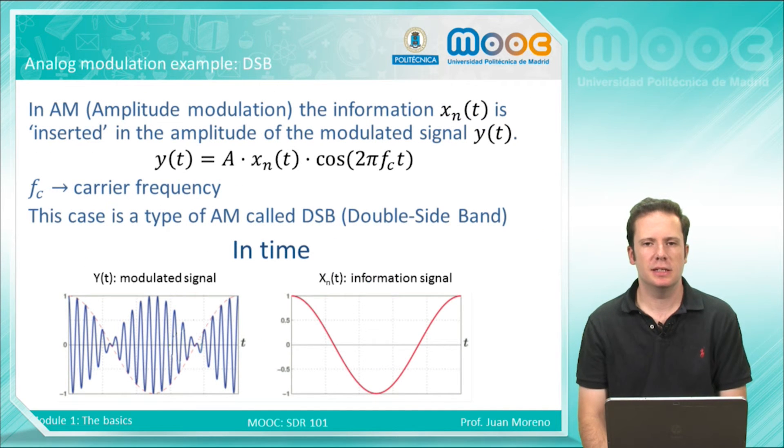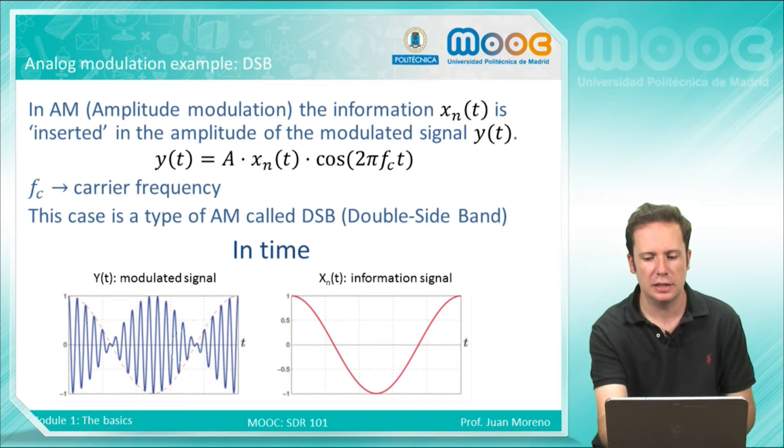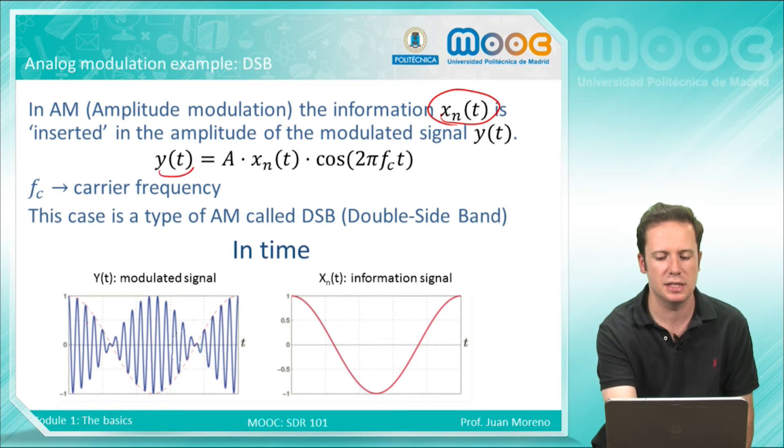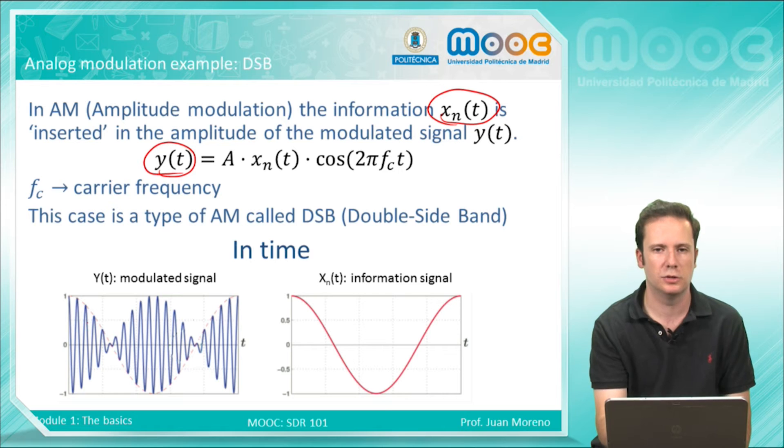Modulating is introducing the information signal into the signal that we will transmit. This signal to be transmitted will be in a different frequency, so here we can see this signal will be the information signal, and this signal will be the one to be transmitted.